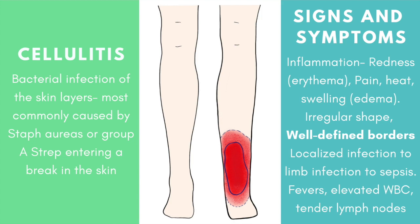The signs and symptoms are related to the body's inflammatory response — a nonspecific, innate response to invasion, and the first step toward healing. You will see the cardinal signs: redness (erythema), pain, heat, and swelling (edema). As you can see in the picture, the left leg is swollen, the ankle definition is lost, it's a localized infection with an irregular shape.